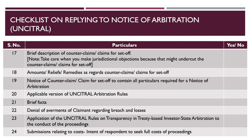The nineteenth item in the checklist is that the notice of counter-claim or claim for set-off is to contain all particulars that are required for a notice of arbitration. The twentieth item is regarding the applicable version of the UNCITRAL Arbitration Rules. There are two versions: 1976 and 2010. In the 2010 rules, several amendments have been made. Which one applies will depend on the wording of the arbitration agreement.